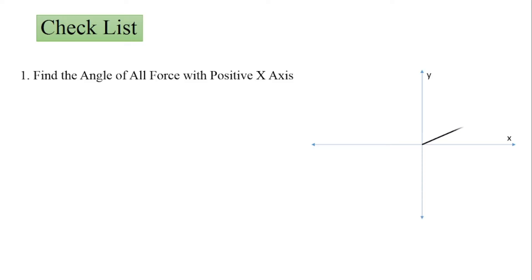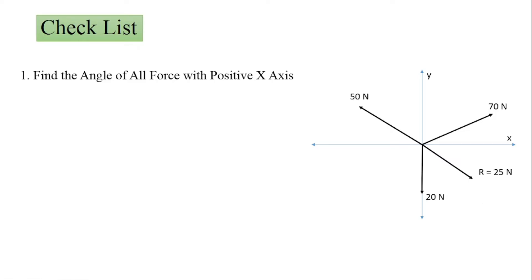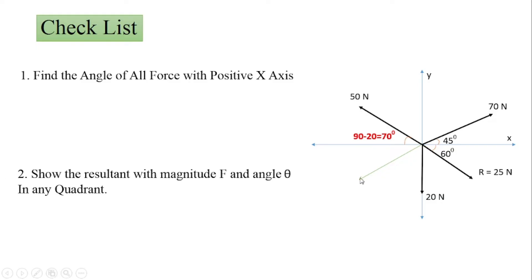First, we find the angle of all forces with the horizontal axis by drawing all the forces. The first force is 70 newton, the second is 50 newton, the resultant R equals 25 newton, and the fourth force is 20 newton. The 50 newton force has an angle given with the vertical of 20 degrees, so converting to horizontal it is 90 minus 20 equals 70 degrees. Other angles are given with respect to the x-axis: 45 degrees and 60 degrees. We show the fourth unknown force F in the third quadrant.